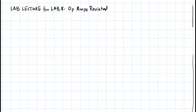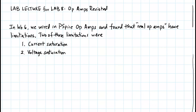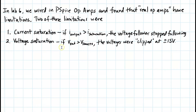This is the lab lecture for lab 8, op amps revisited. In lab 6, we wired op amps in PSPICE and found that real op amps have limitations. Two of these limitations were current saturation and voltage saturation. With current saturation, if the current from the output node exceeded the saturation current, the voltage follower stopped following. With voltage saturation, if the output voltage exceeded the supply, it was clipped at plus or minus 15 volts.